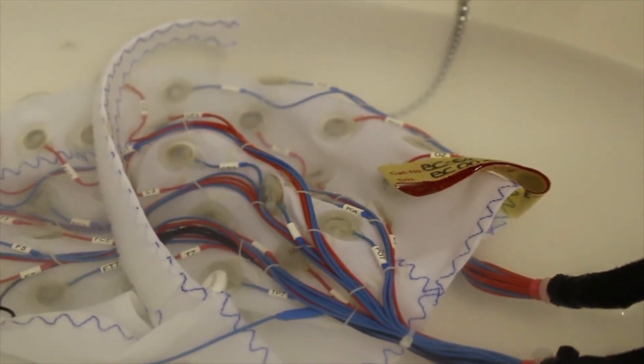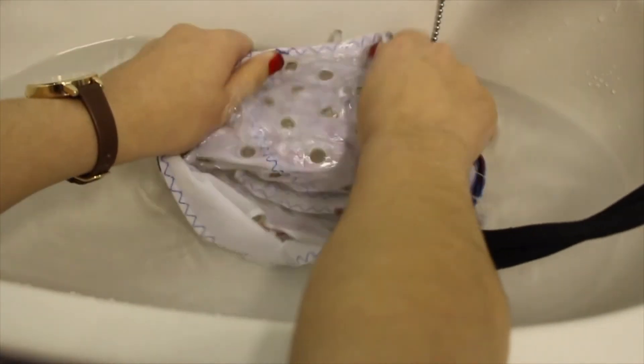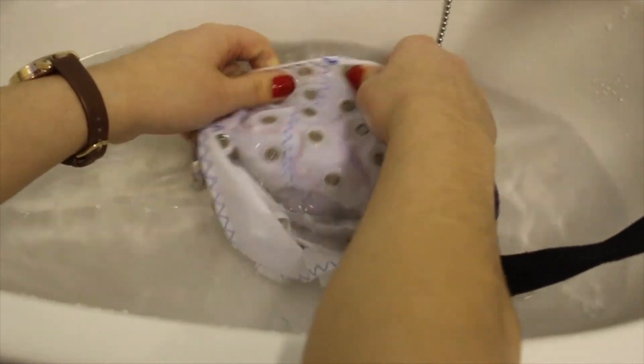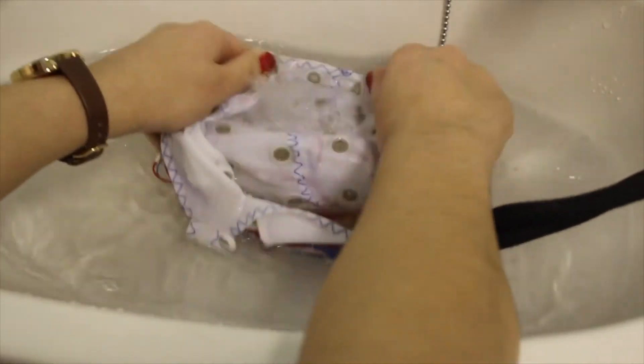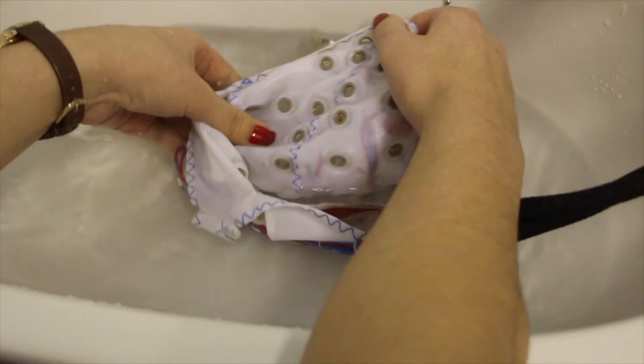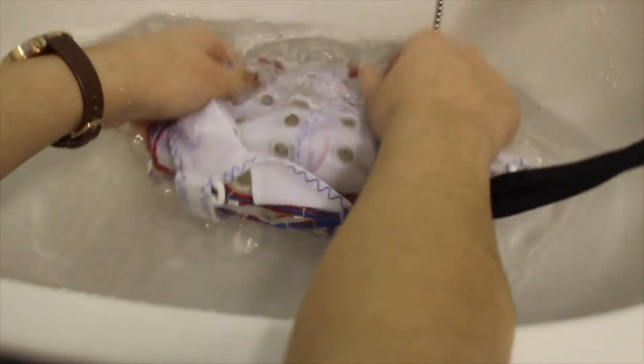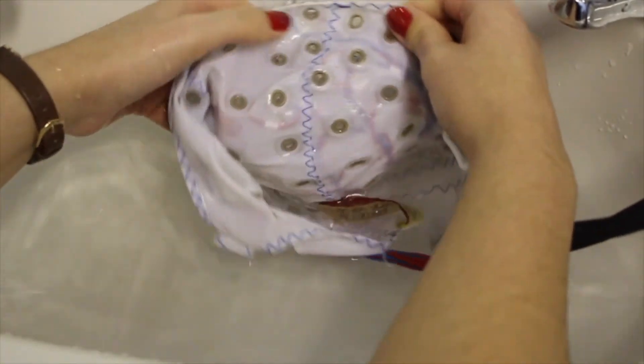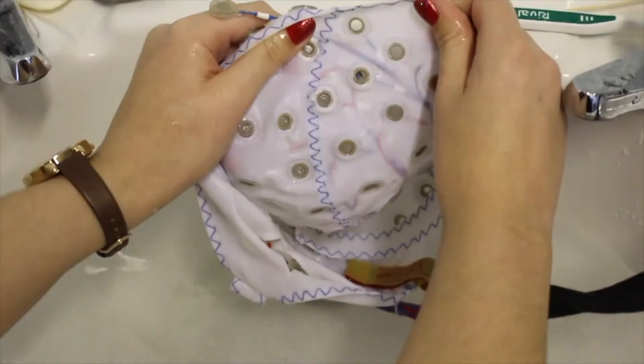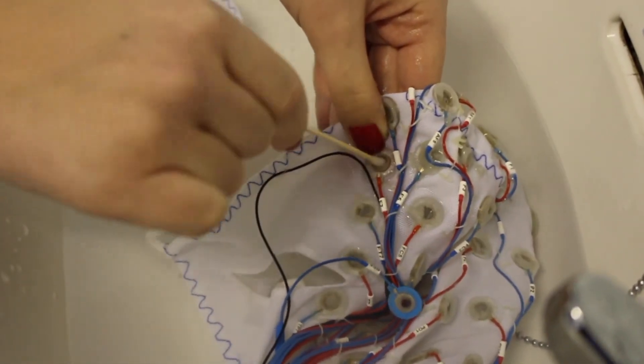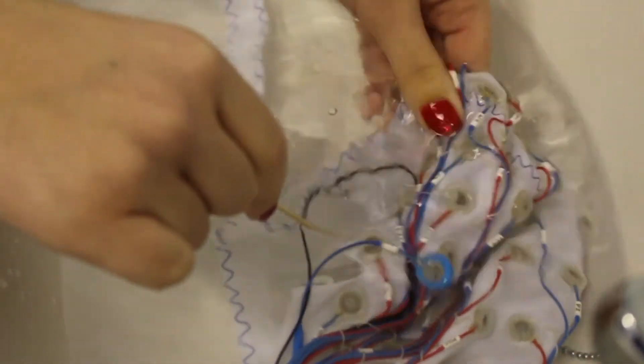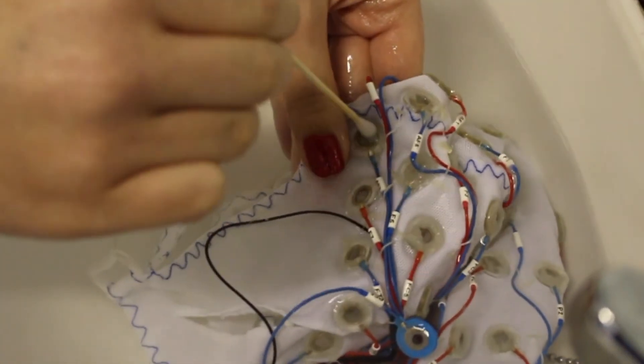After the cap has soaked, you can begin getting the gel out of the electrodes by flattening sections of the cap and pushing water through by moving it back and forth as shown. This will dislodge a large amount of gel without the need for anything abrasive. You should then go back with a cotton bud and gently clean away any gel that may be left, pushing it through to the inside of the cap. Do this for all of the electrodes, not forgetting the reference and ground.